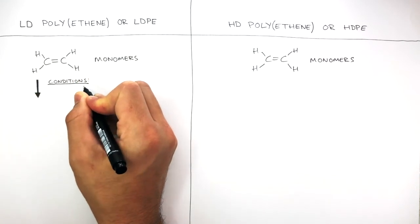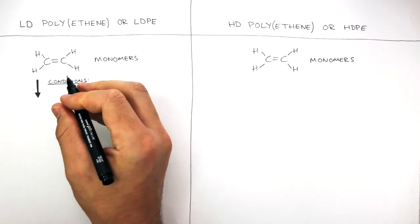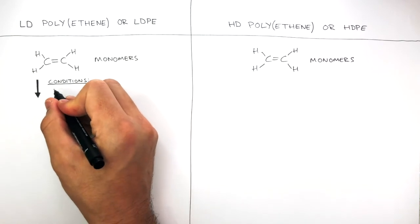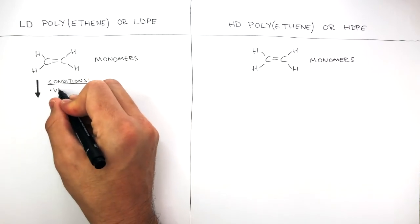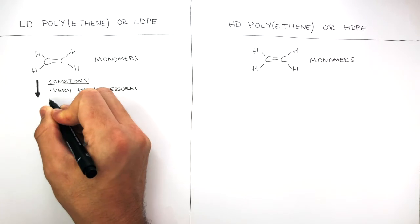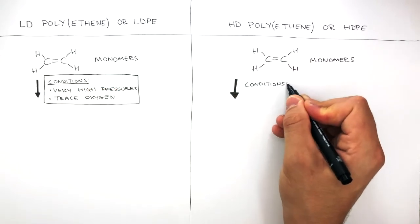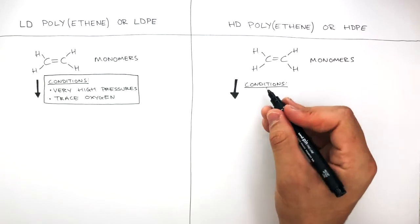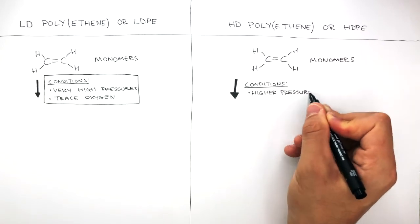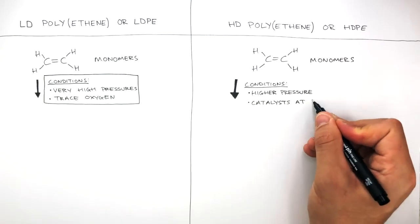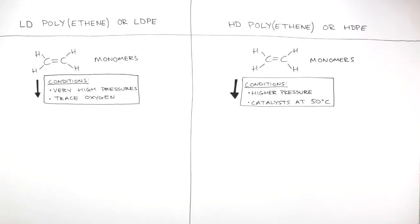The conditions when making LDPE are that very high pressures are used, and there's trace oxygen as well. And the conditions when making HDPE is there is a higher pressure, and a catalyst at 50 degrees Celsius is used.